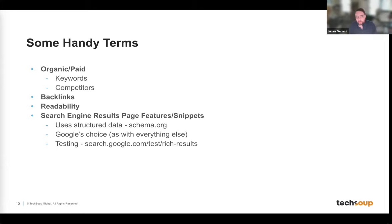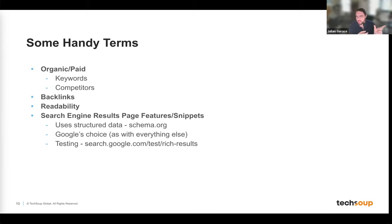If you want to see if your page is eligible for any SERP features, you can enter your URL in the rich results test tool and it will tell you directly. SERP features and snippets may also be called SERP features or search engine results page (SERP) snippets. This can be really helpful to see exactly how your site will appear.